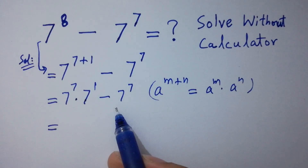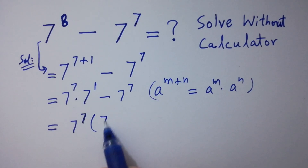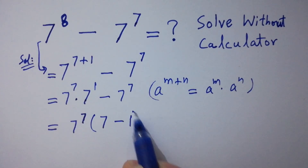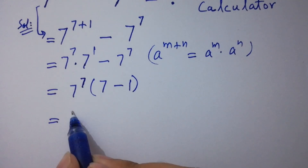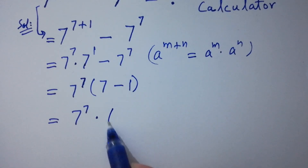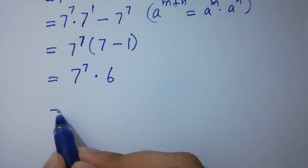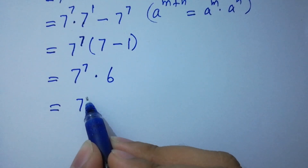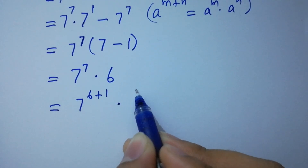Here 7 to the power 7 can be common. Then we have 7 as it is minus 1. Next, 7 to the power 7 times 7 minus 1 is 6.